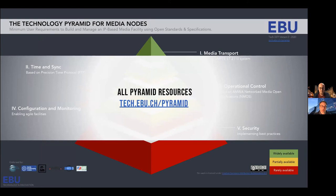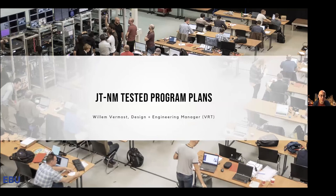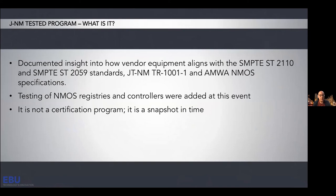All pyramid resources including the checklist can be found at the EBU URL. Now, on the JT&M tested program: a tested program is a documented insight into how vendor equipment aligns with SMPTE ST 2110, SMPTE ST 2059, the JT&M TR 1001-1, and the AMWA NMOS specifications. Testing of NMOS registries and controllers was added this time. It's not a certification program — it's a snapshot in time, so results could change with a new hardware or software revision.